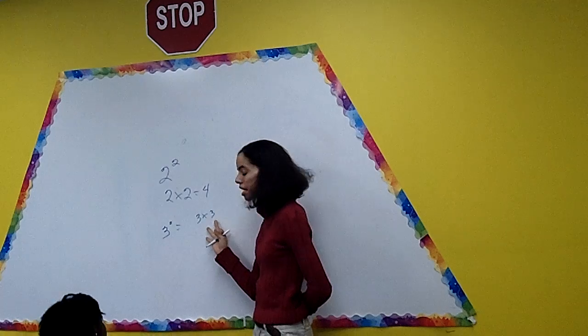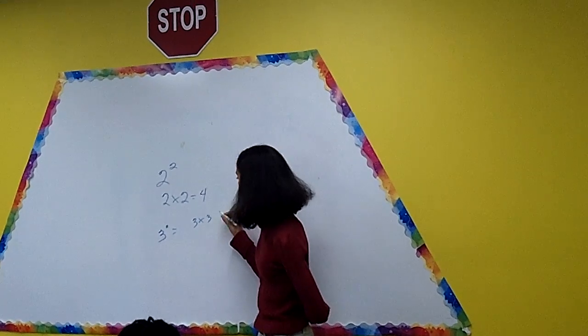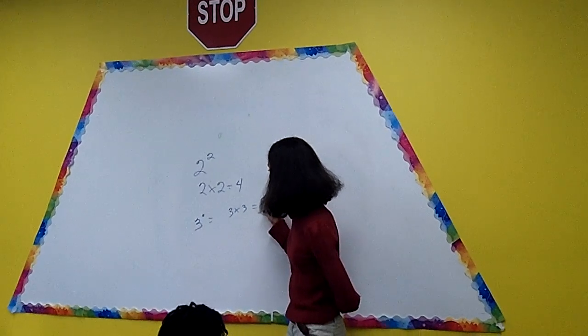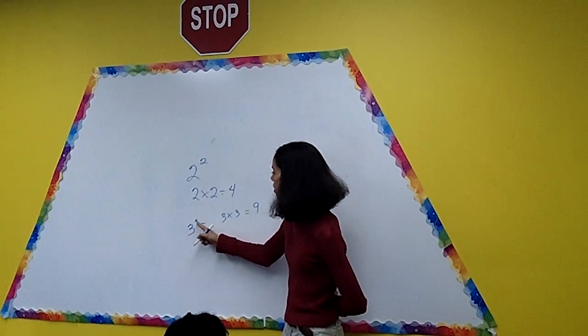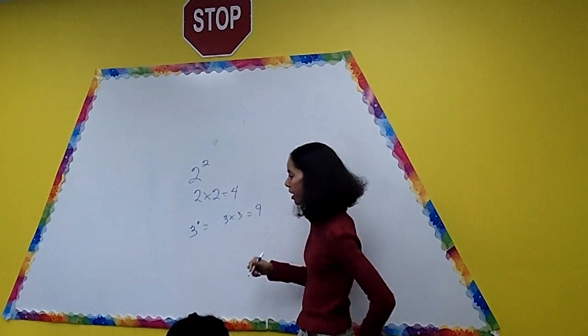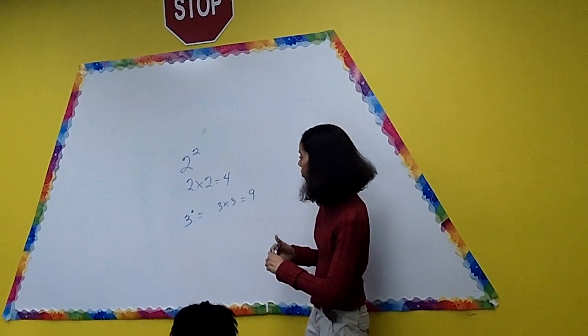Three, six, nine. So three times three is nine. Nine. So three to the second power or three squared is nine. Very good, Jake.